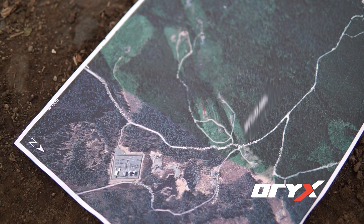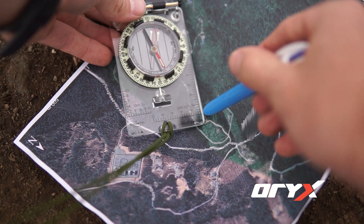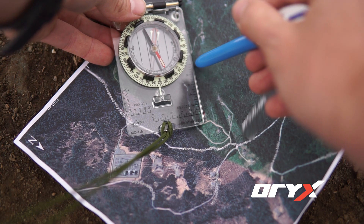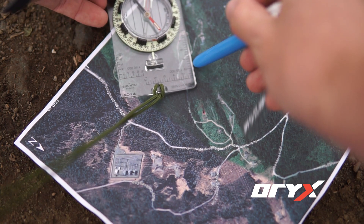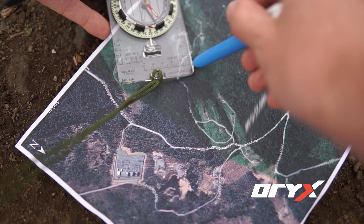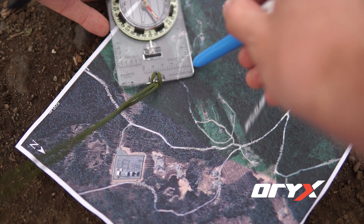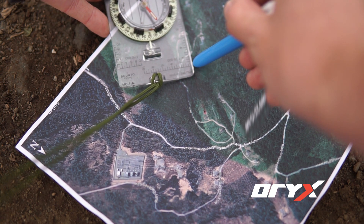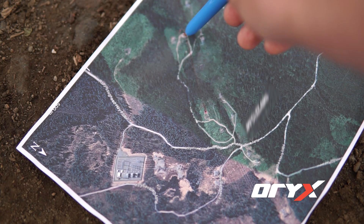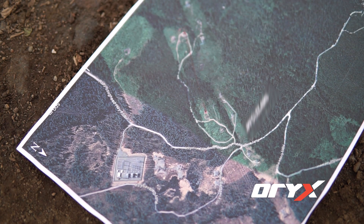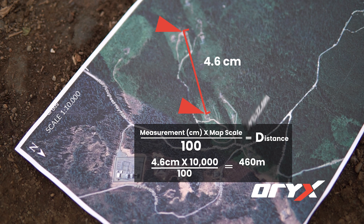Then we can measure the distance between us and the target. You can use the scale on the map to convert the distance measured to real world distance. Our example is 1 in 10,000 scale, so every centimeter measured is 10,000 centimeters real distance. We can convert 4.6 centimeters to 46,000 centimeters, which is 460 meters between us and the target.